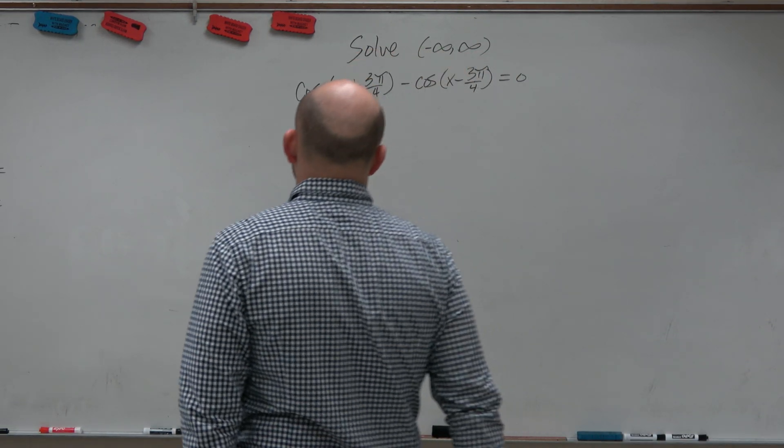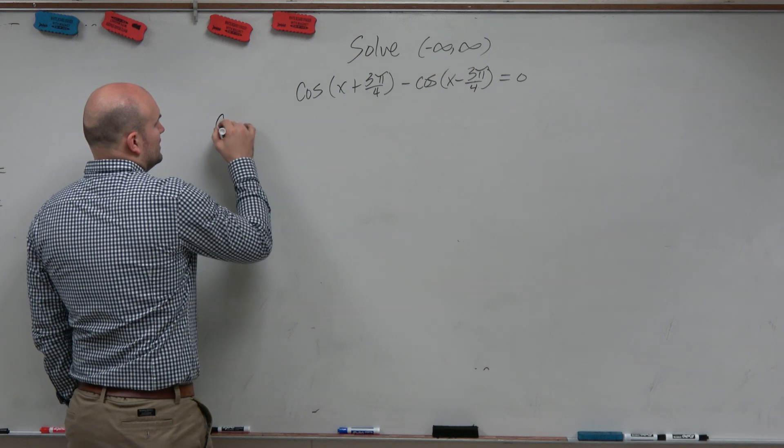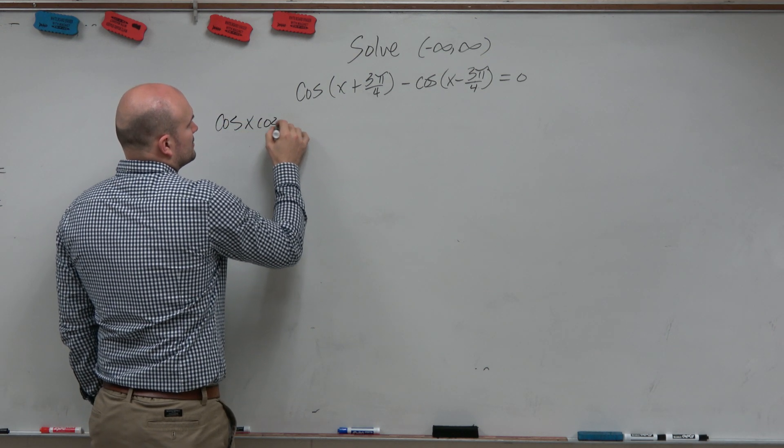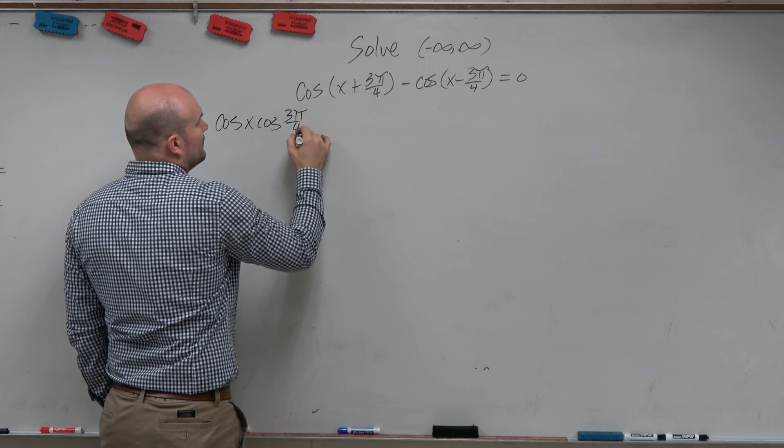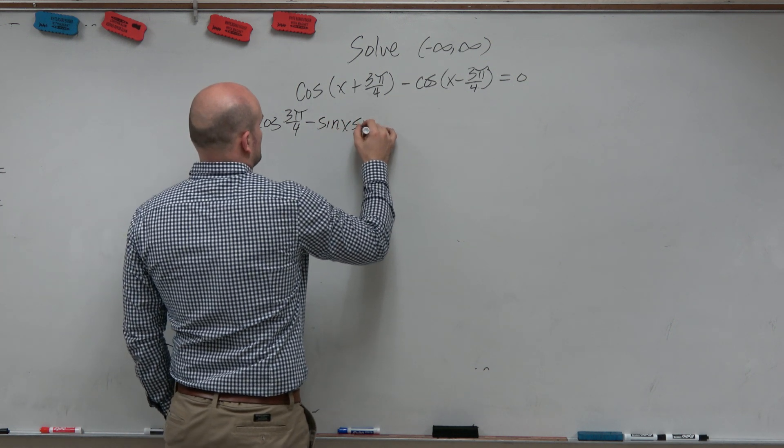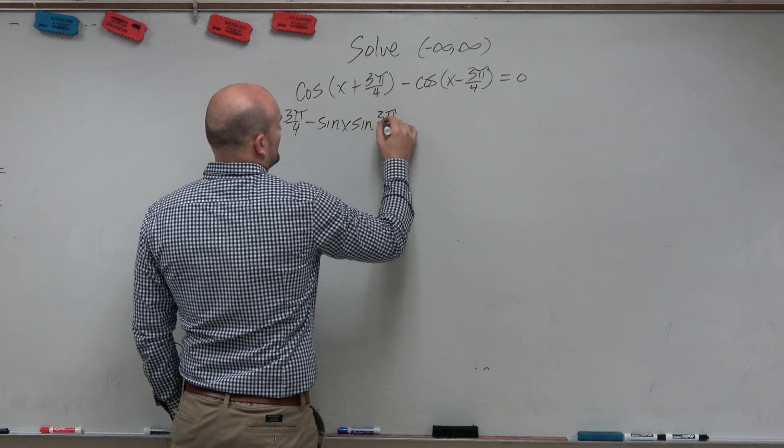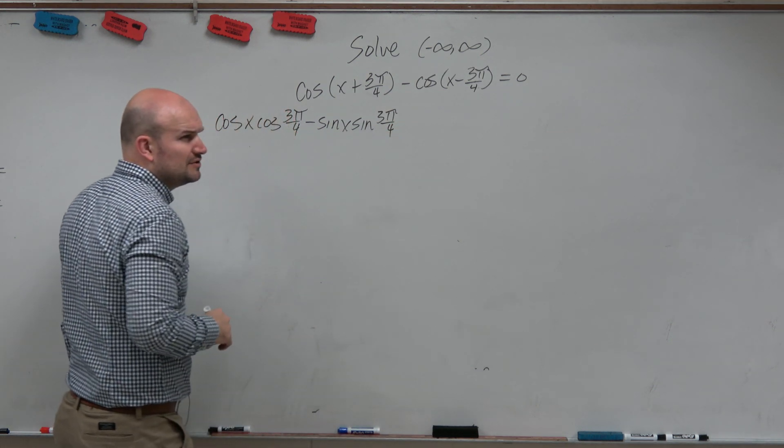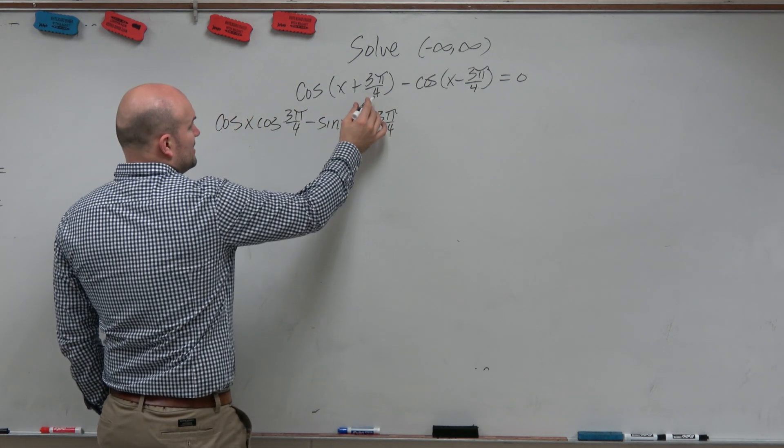I will say this is going to be cosine of x, cosine of 3π over 4, minus sine of x, sine of 3π over 4. Or is it sine of 3π over 4, sine of u? Yeah, it's the same. So that's this one.